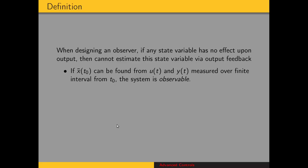More formally, we want to say that if the initial state vector can be found from the input u and the output y measured over a finite interval from the initial time, then the system is observable.